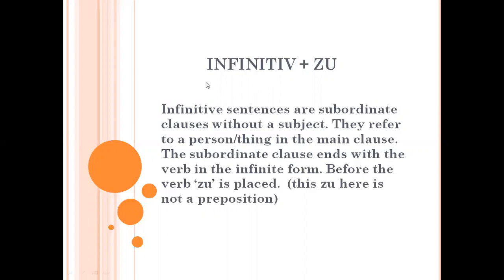Today we are going to learn the new conjunction: infinitive plus 'zu.' This conjunction is used to combine infinitive sentences. Infinitive sentences are subordinate clauses without a subject. Infinitive sentences are sentences in which the verb is in its infinitive form — that is, in its original form. Whenever the verb is in its original form, it is an infinitive sentence.